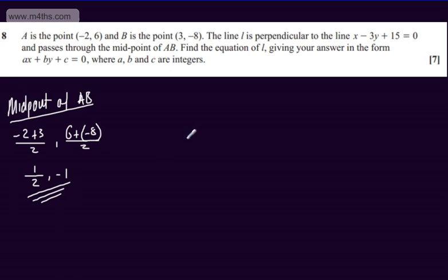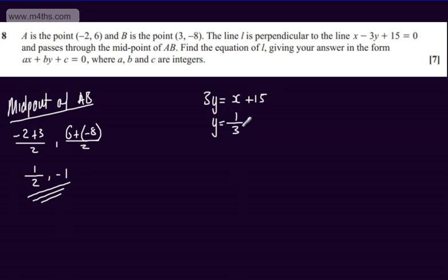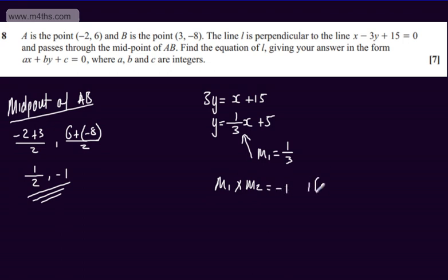I want to find the gradient of L. We're told that it's perpendicular to the line x minus 3y plus 15 is equal to 0. I'm going to rearrange this in the form y is equal to mx plus c. So adding 3y to both sides, 3y is equal to x plus 15. Dividing both sides by 3, we get y is equal to 1 third x plus 5. We can see the gradient of this line, which I'm going to call M1, is equal to 1 third. We can say that M1 multiplied by M2 will be equal to minus 1 if perpendicular.